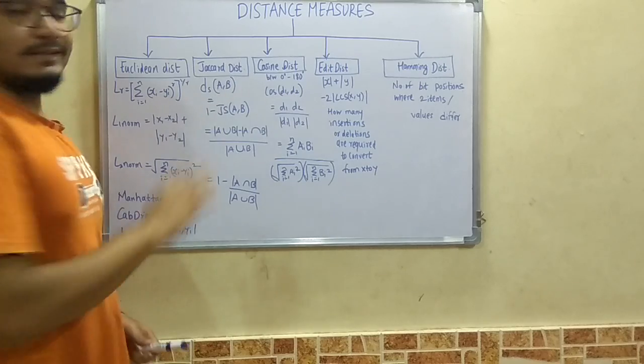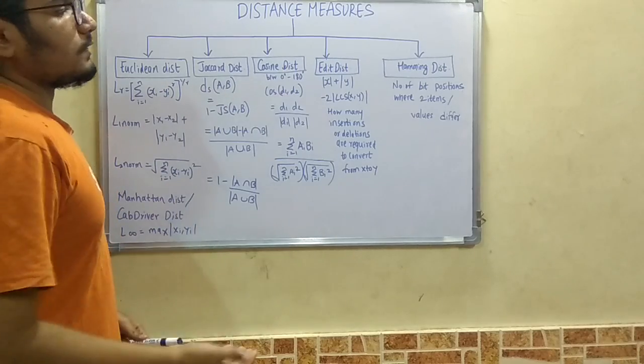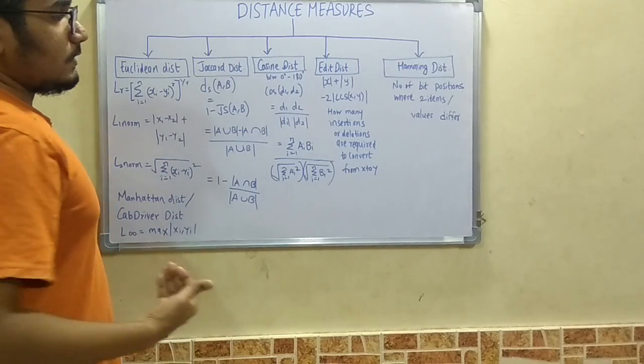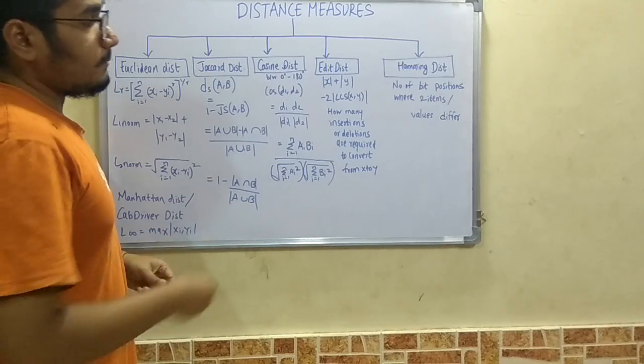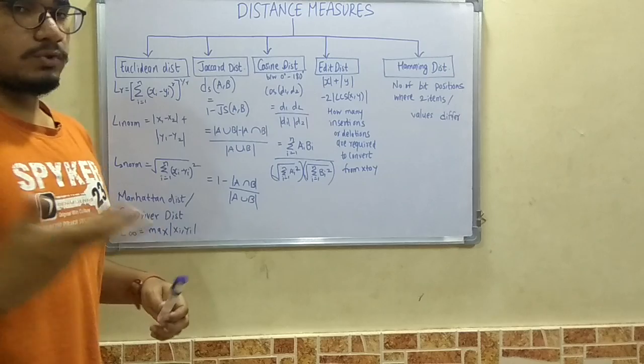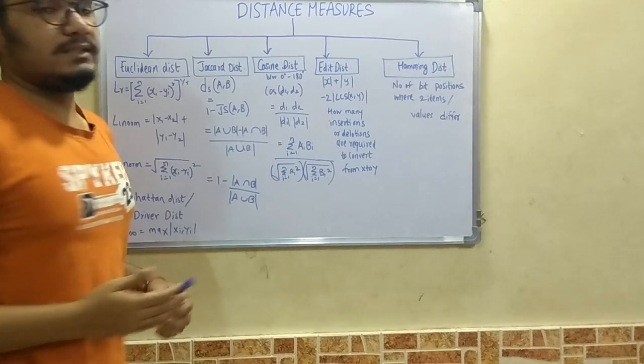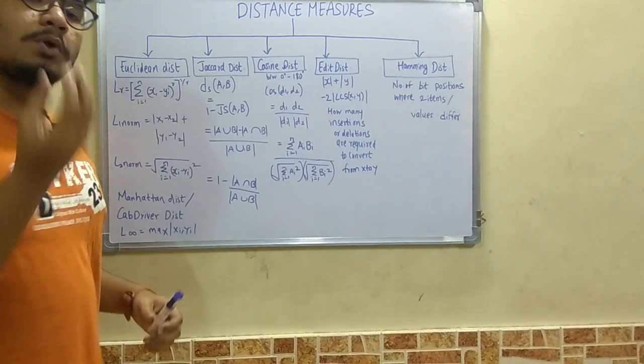Next we move on to edit distance. Edit distance is given by mod x plus mod y minus 2 times LCS. What is LCS? LCS is the longest common subsequence.